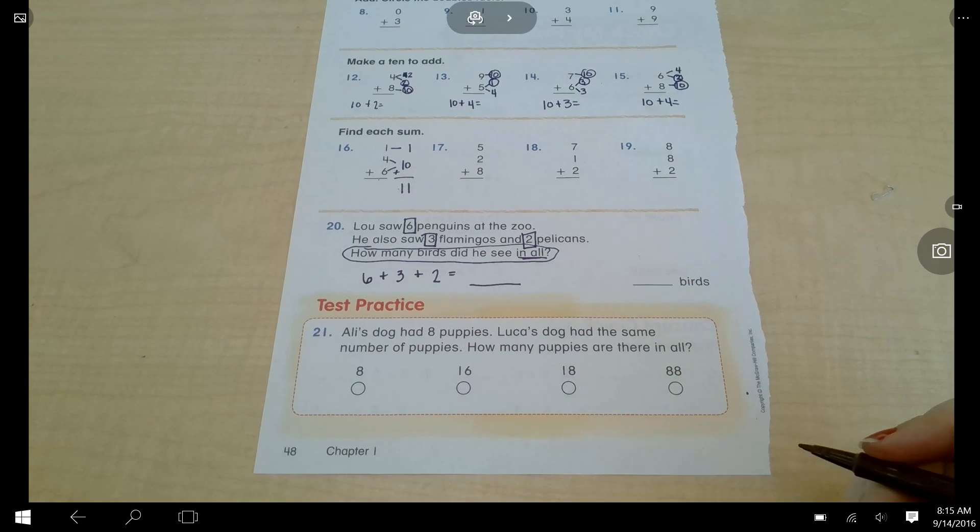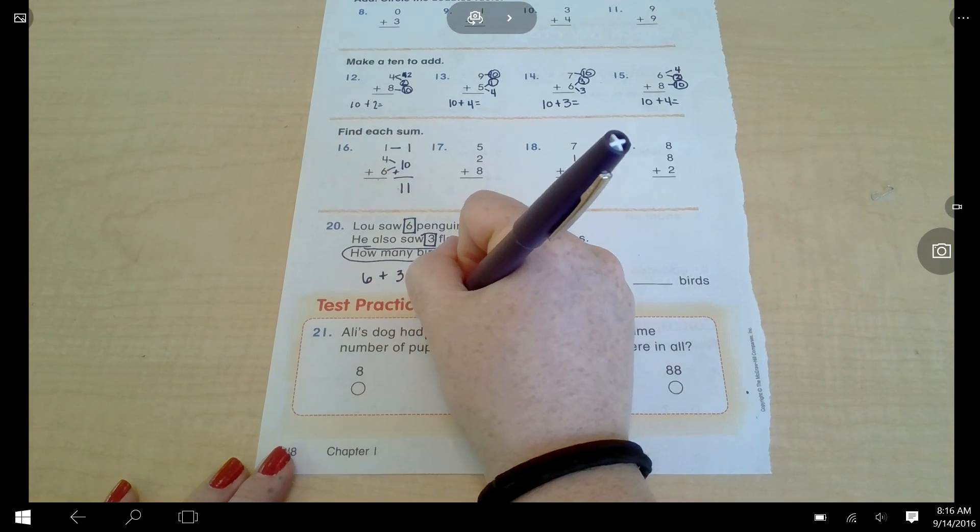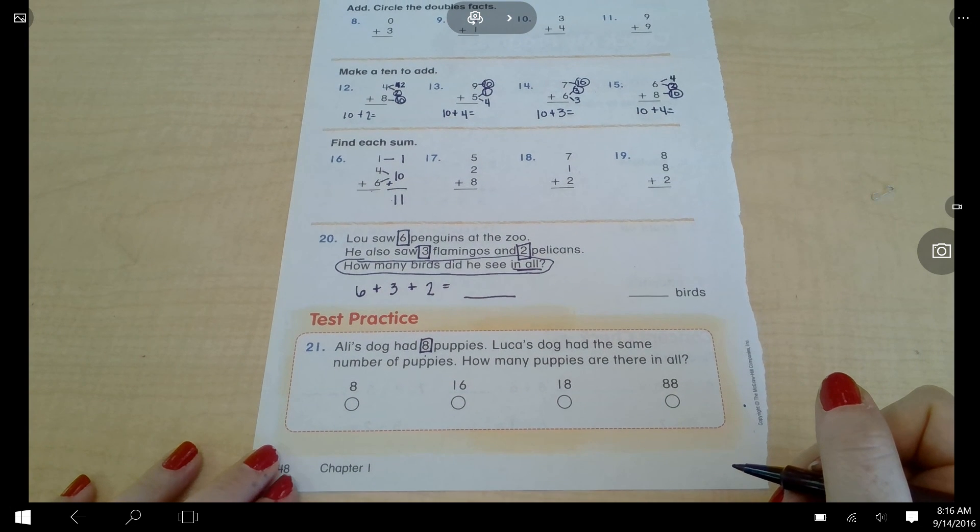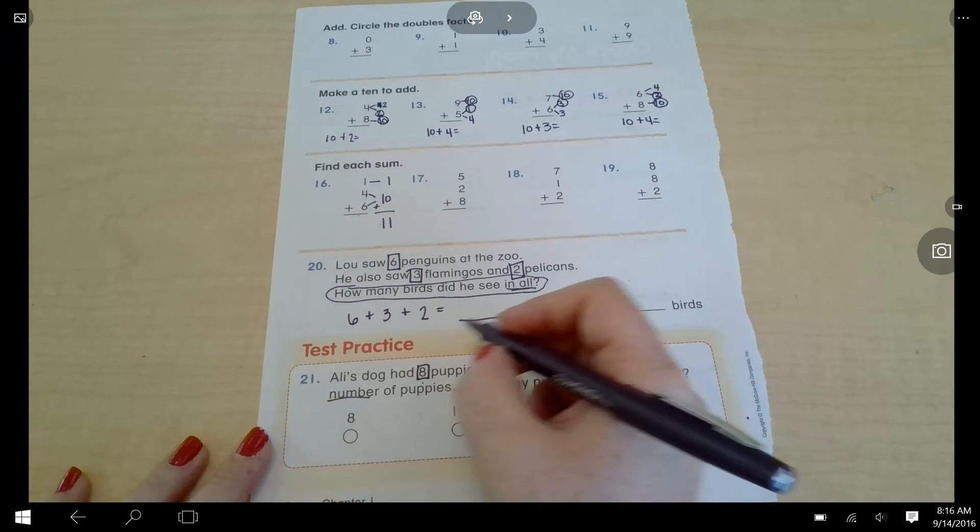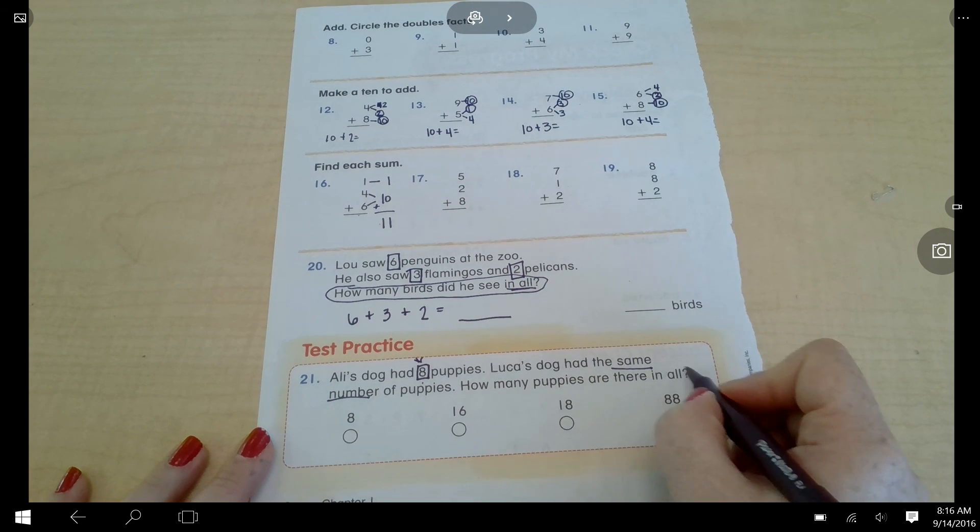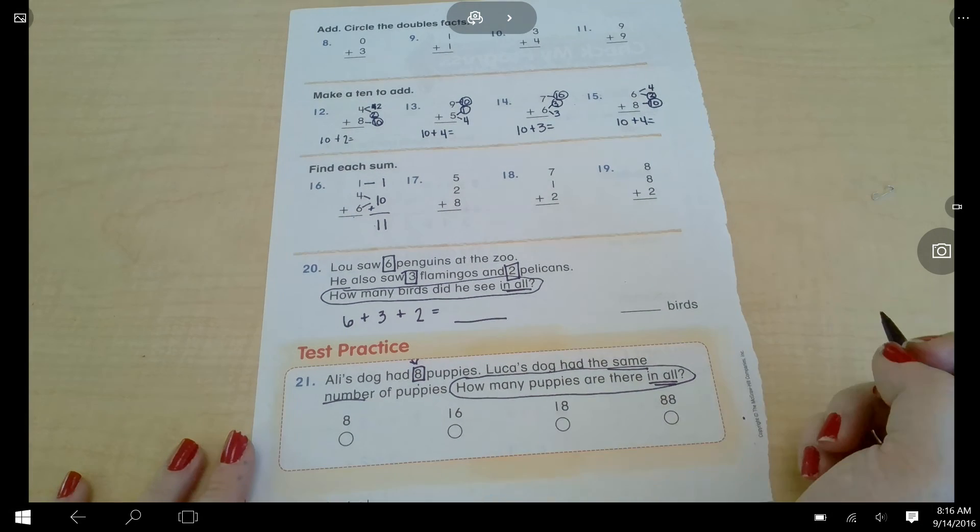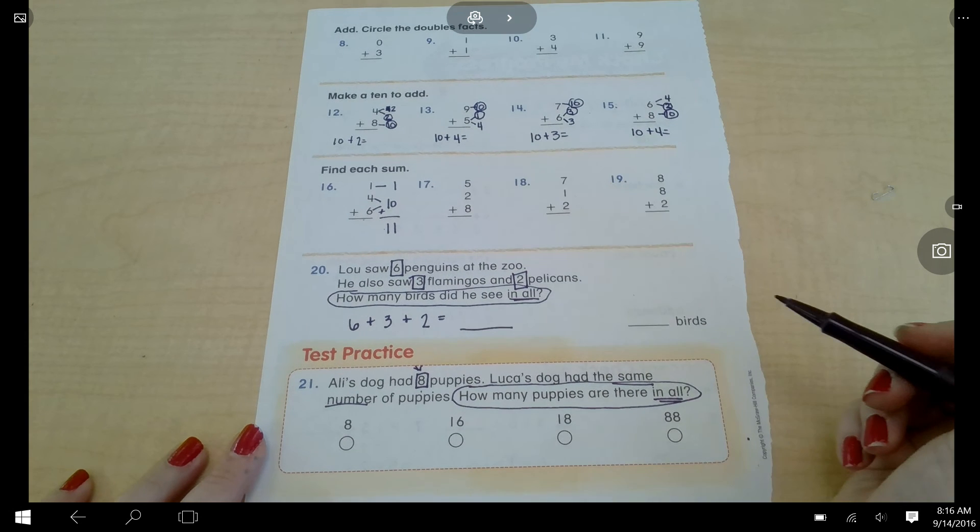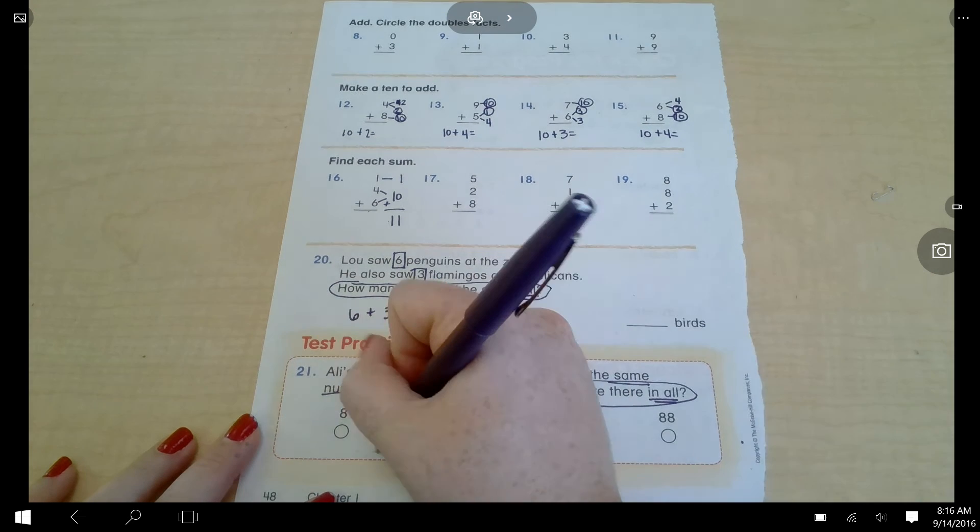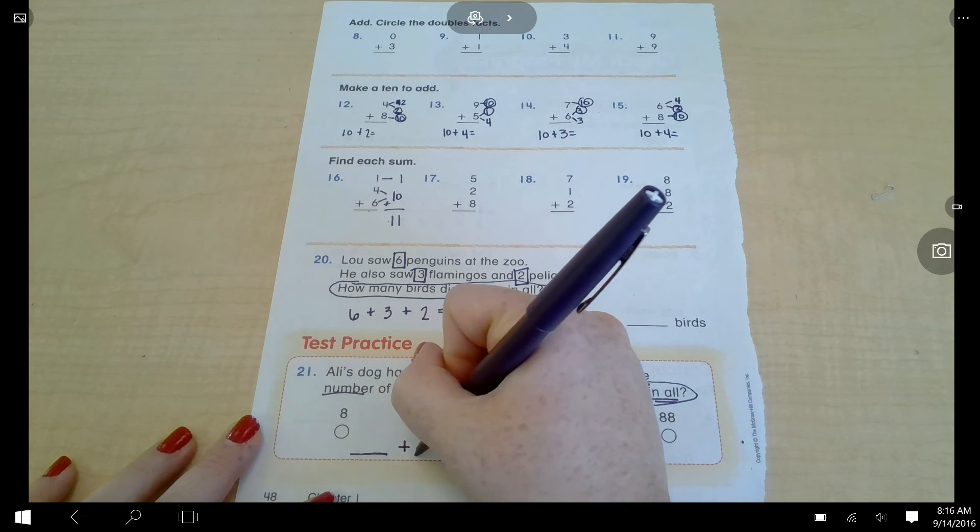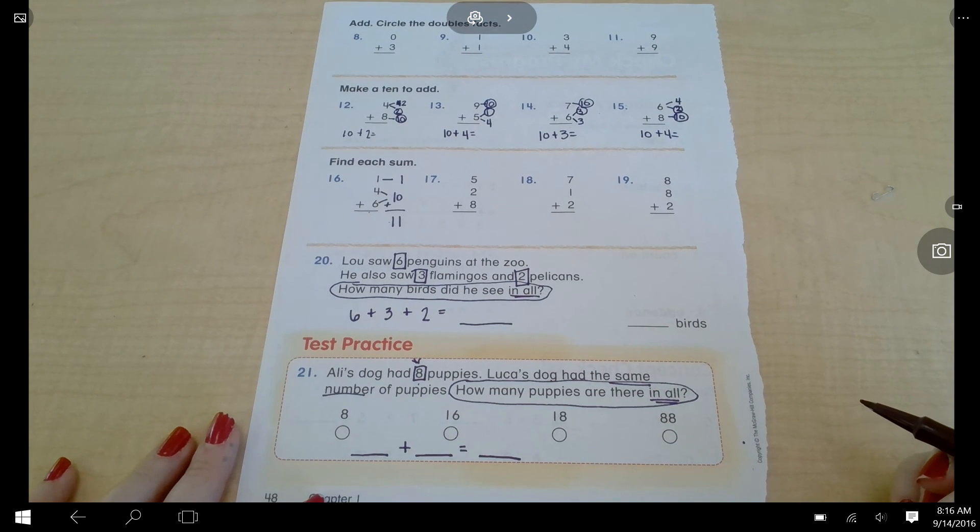All right, we're on the last question. This question says Howie's dog has eight puppies. Luca's dog had the same number of puppies. How many puppies are there in all? Same number, which is this one right here. How many puppies are there in all? I got to circle the question. In all tells me to add. Go ahead and solve that problem on your own. Color in the circle that you think is the correct answer and write a number sentence. Right here at the bottom, I want you to write how you figured out your answer. That's a number sentence. Then color in the answer you come up with.